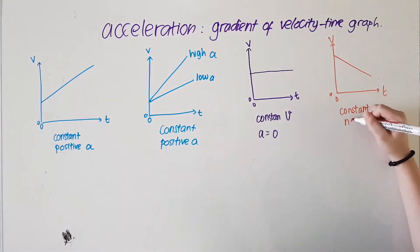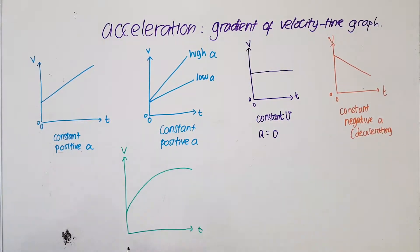However, if the slope of the graph is negative, the object has negative acceleration, or we can say it's decelerating. On the other hand, if the velocity time graph shows a curve, its slope is changing over time. This means that it has a changing acceleration.